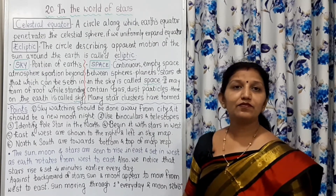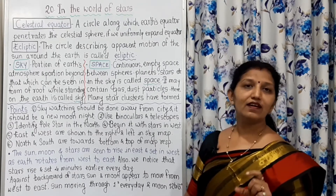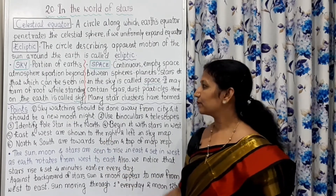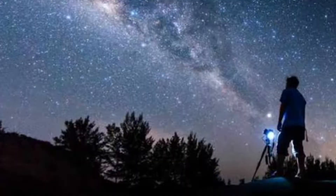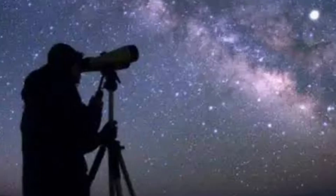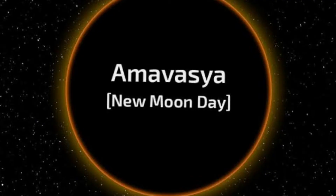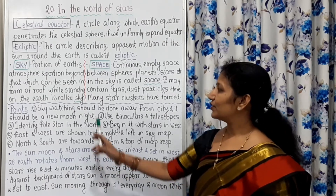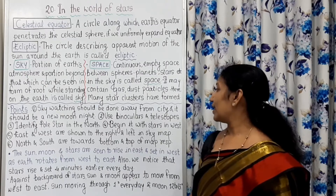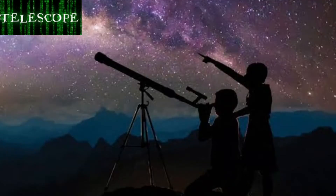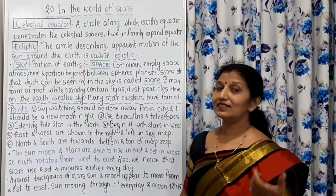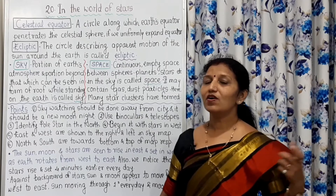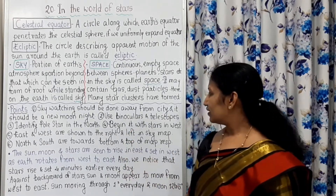While observing the sky, certain points should always be remembered. Sky watching should be done away from the city, and it should be done on a new moon night. Use binoculars and telescopes while watching the sky. Then identify the Polar Star in the north and take it as a standard reference for sky observation before you begin.